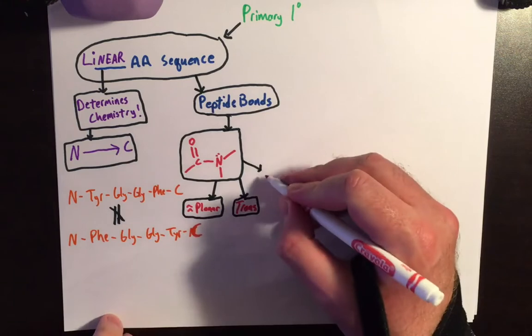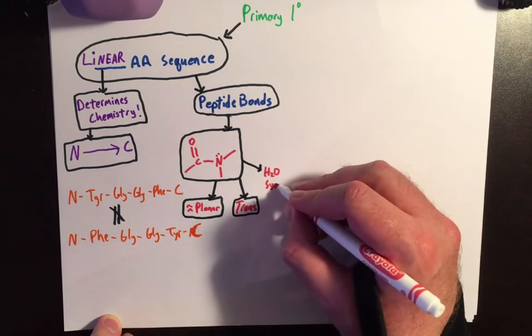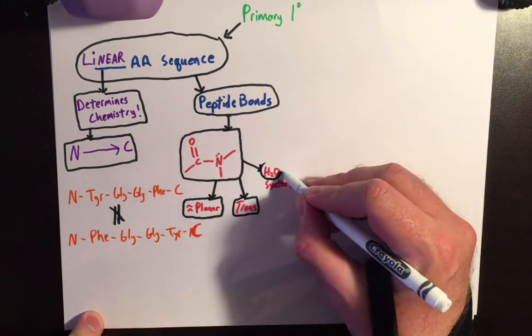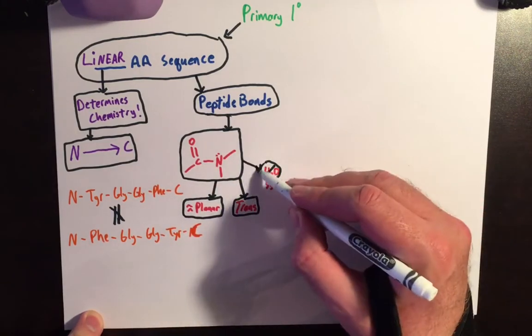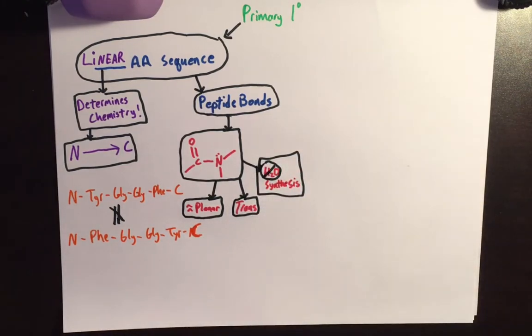And like most biomolecules, it is synthesized by dehydration synthesis. So taking the water out of it is how we form a peptide bond. Removal of the water gives us the peptide bond. It kind of looks ugly. Should have done better.